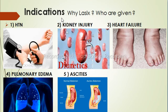Here are some indications of Furosemide — why LASIX is given and who is given LASIX. We give this medication to draw fluid from the patient's body. The first indication is hypertension or uncontrolled hypertension. If normal antihypertensive medications are not working, we will give LASIX. It will increase urine flow, and as a result blood pressure is reduced.